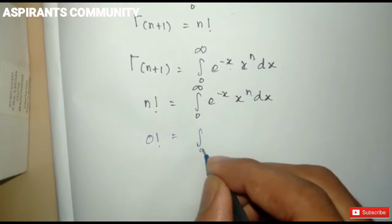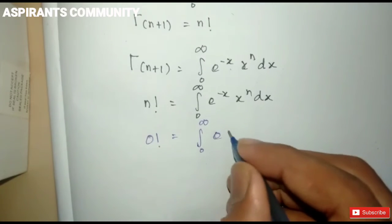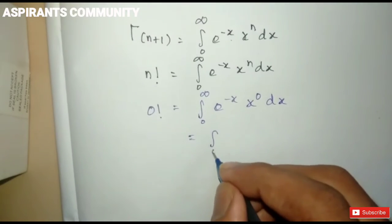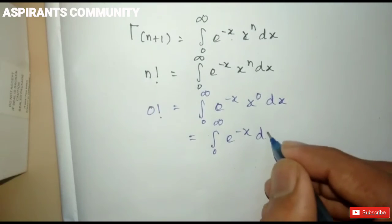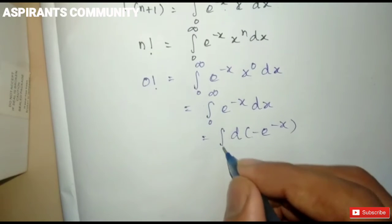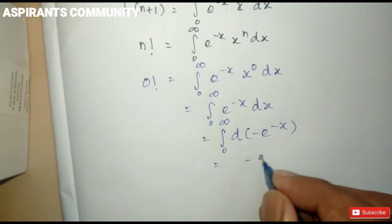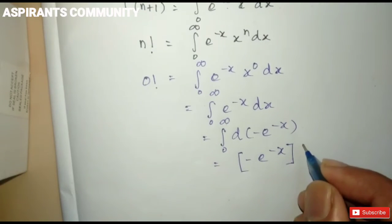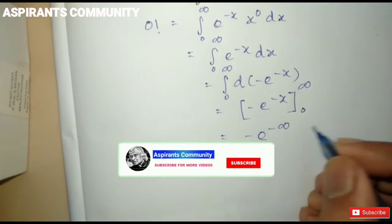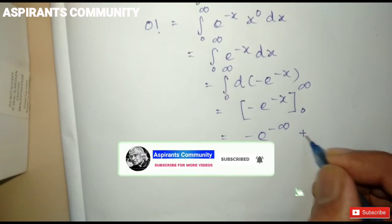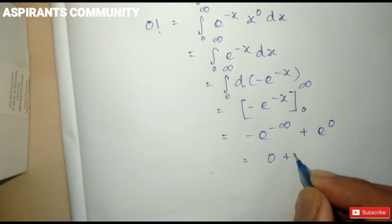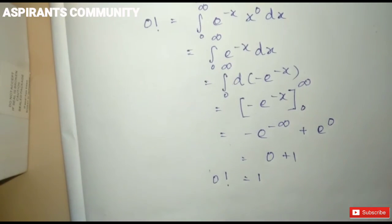So 0 factorial equals the integral from 0 to infinity of e to the power of minus x dx. Integrating gives minus e to the power of minus x, evaluated from 0 to infinity. That is: minus e to the power of minus infinity, minus (minus e to the power of 0), which equals 0 minus (minus 1), giving 1. Therefore 0 factorial equals 1.